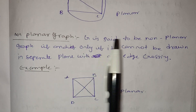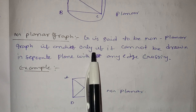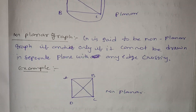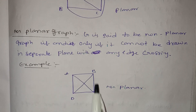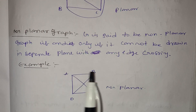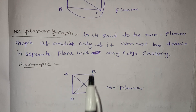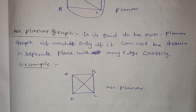Now let's see the non-planar graph. Graph G is said to be a non-planar graph if and only if it cannot be drawn in a separate plane without any edge crossing. We can draw it separately, only one edge. For example, here we have 4 vertices: 1, 2, 3, 4. Here we have 6 edges with a cross edge. We can draw a non-planar graph. Now we can prove.